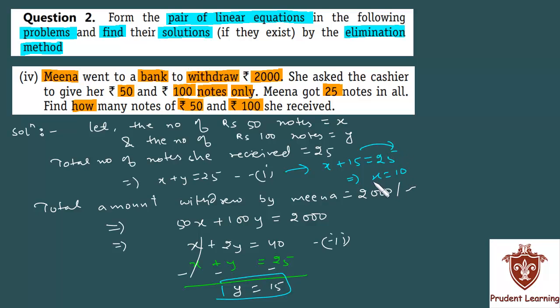Because 25 minus 15 is 10. So now you know the value of x as well as the value of y. x was the number of rupees 50 notes, and y was the number of rupees 100 notes.